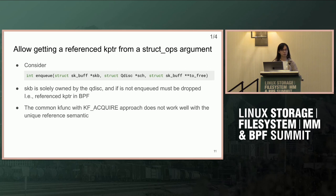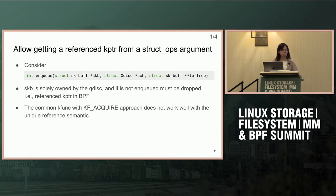Can you explain again why exactly the key-acquire approach doesn't work? Why do you want to make this a unique reference where only one is allowed? SKB has an internal ref count, so you can keep incrementing and dropping it. The reason is that we want to reuse the list node and RB tree as part of the data portion of the SKB structure. In QDISC, it's not like other BPF use cases where the SKB is solely owned by the QDISC — we don't increase the reference count or do anything with that.